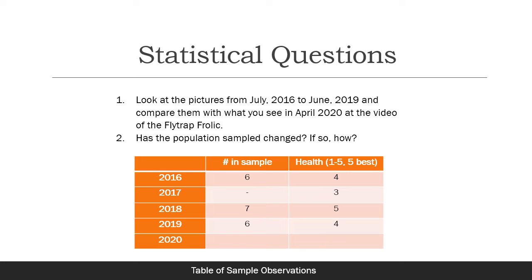From these observations we can form some statistical questions. Looking from July 2016 through 2019 and comparing the samples and individuals in each, you can make reasonable statistical estimations of the population — is it getting bigger or smaller, and what is the health of the plants? We can look at the colors and how healthy the stems were across years.